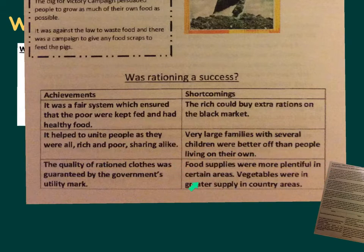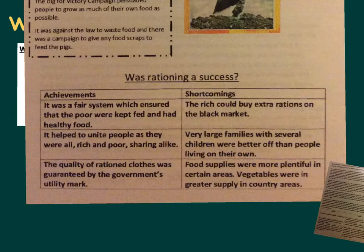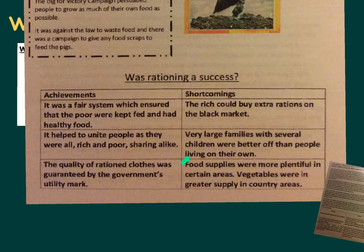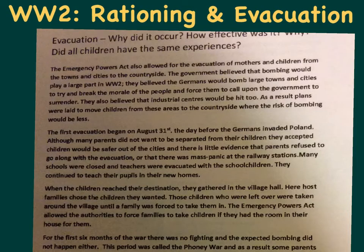Food supplies were more plentiful in certain areas - if you lived in the countryside you had access to seasonal foods like berries for jams, and vegetables were in greater supply. Sources would show different opinions on rationing success depending on whether you were in the city - where you'd panic more and have less access to extra food - or the countryside, where there was greater access to seasonal foods and the black market. Another key factor in reducing social divisions in World War II was evacuation.